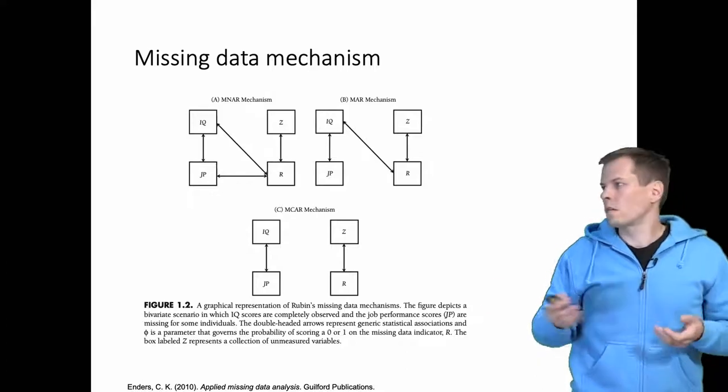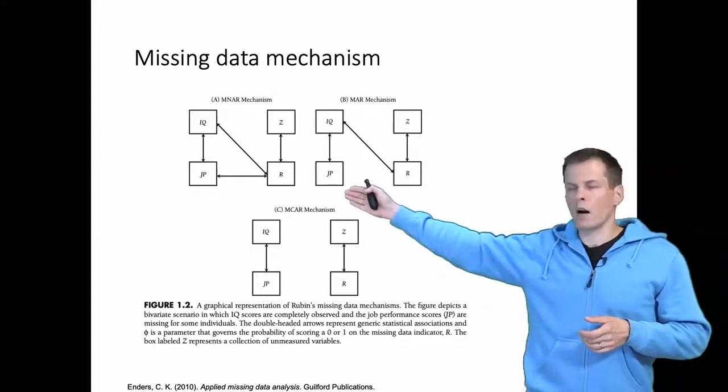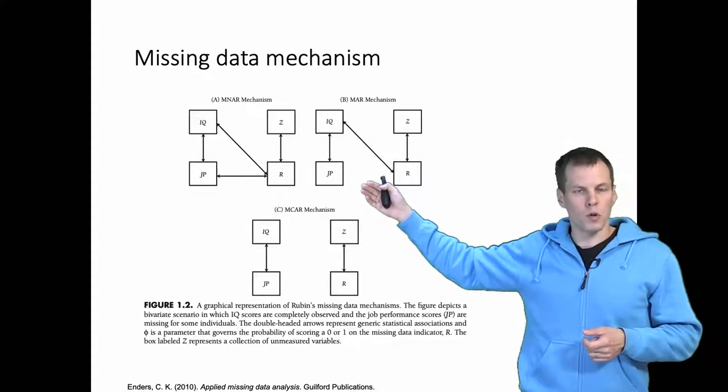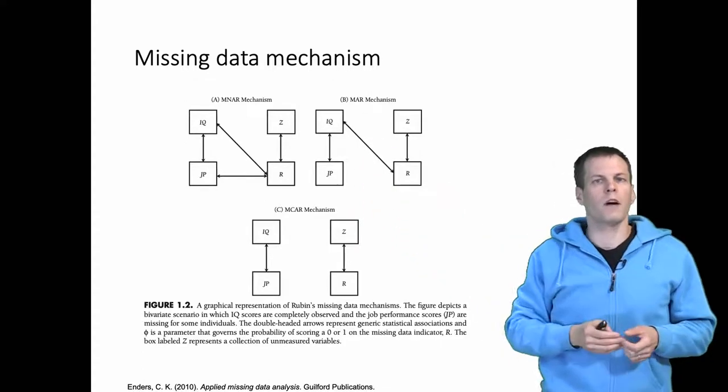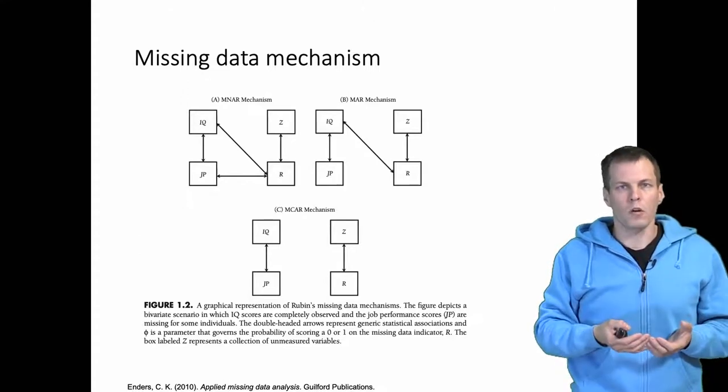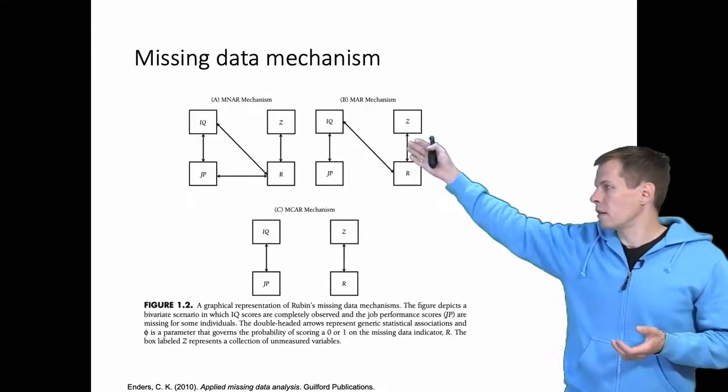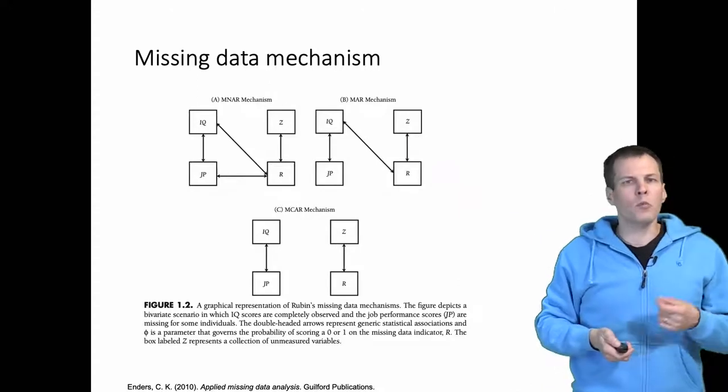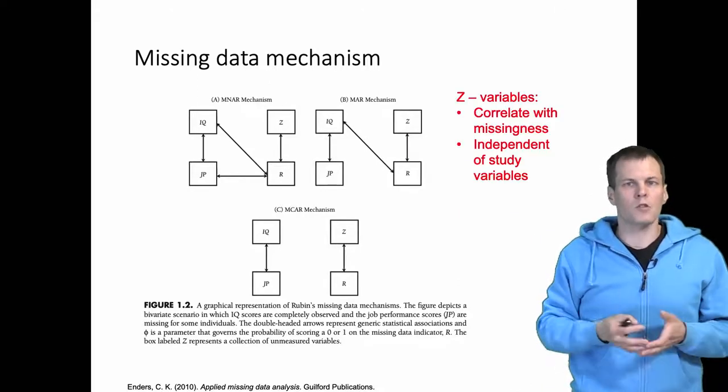We know that missingness R can depend on the observed predictors and the observed dependent variable, but it also depends on variables that we don't observe. We call these variables Z here. So if we observe this Z, we can actually do a couple of things.